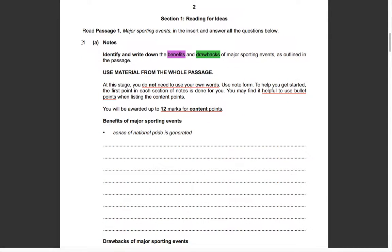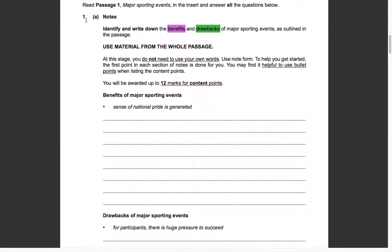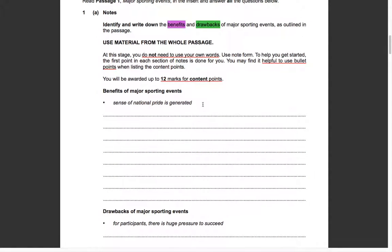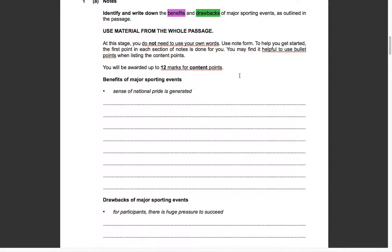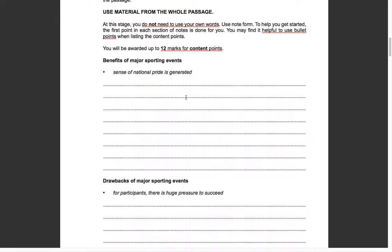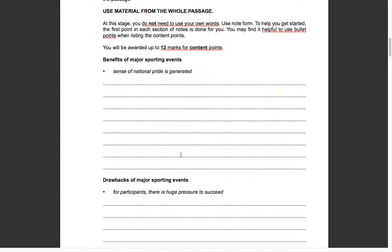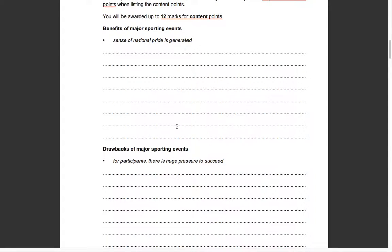For our first question related to Section 1, we are being asked to identify the benefits and drawbacks of major sporting events as outlined in the passage. The benefits are highlighted in purple and the drawbacks in green. For Part A of Question 1, we write answers in bullet points using the wording from the passage — no need for full sentences. There are 12 marks total, so six points for each side.